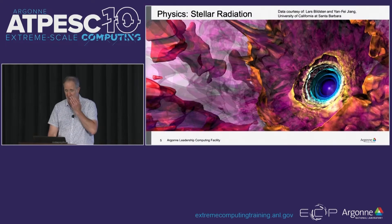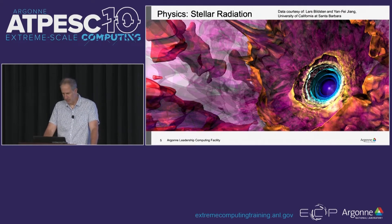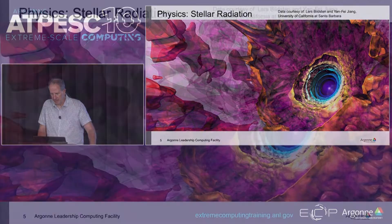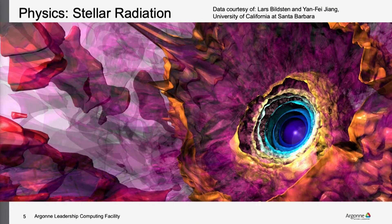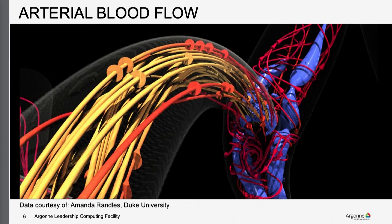Here are a couple of quick examples of visualizations we've worked on. This is an example of massive stars that can be on the order of a hundred times the size of the Sun. Despite their intense gravity, these stars also lose mass — they have outbursts of gas leaving them — and the goal of this project is to understand what that process is and how it happens. This next one is looking at blood flow through complex arteries.